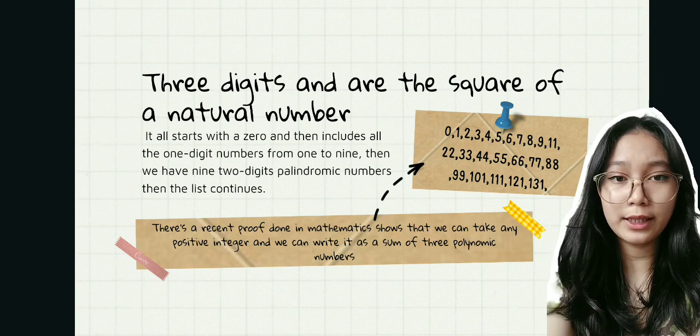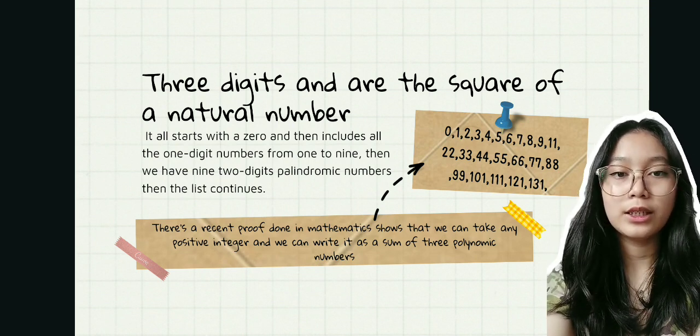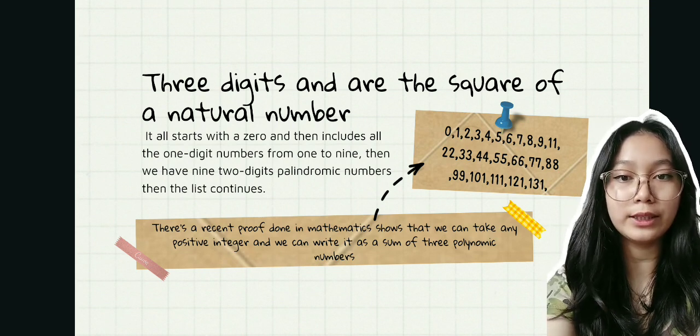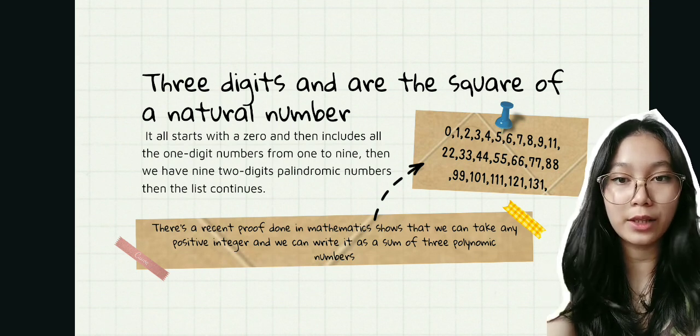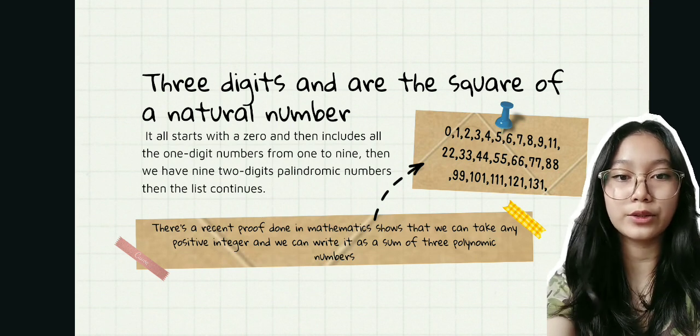But before that, I will give you a list of palindromic numbers. It all starts with zero and then includes all the one-digit numbers from 1 to 9, then we have nine two-digit palindromic numbers, then the list continues.